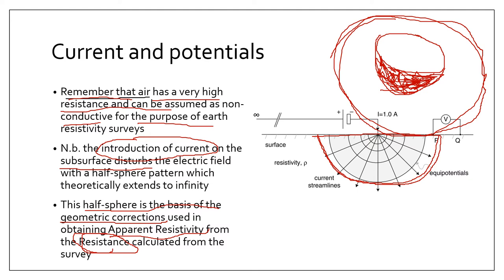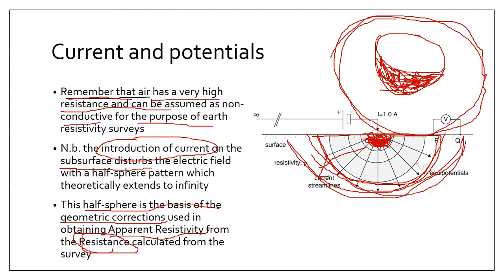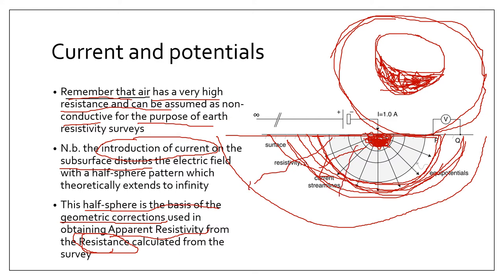The geometry can be slightly modified depending on the array used, but importantly, we can approximate the geometry of the portion of earth being short-circuited. This knowledge allows us to determine the geometric correction factor needed to obtain apparent resistivity from measured resistance. Also important: the electric potential is generally strongest at the injection point. As the disturbance travels farther, it becomes diluted over a larger surface area, resulting in a weaker signal.